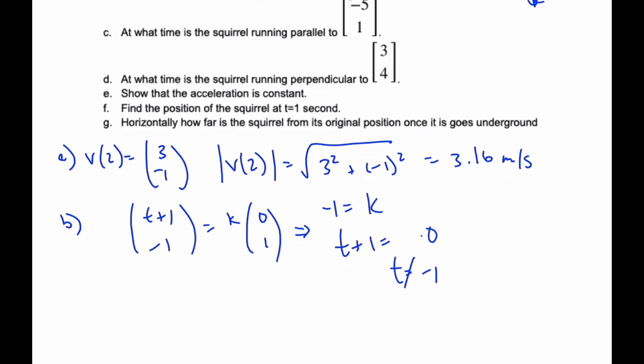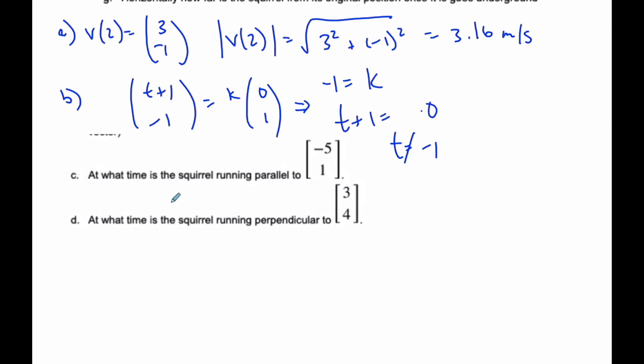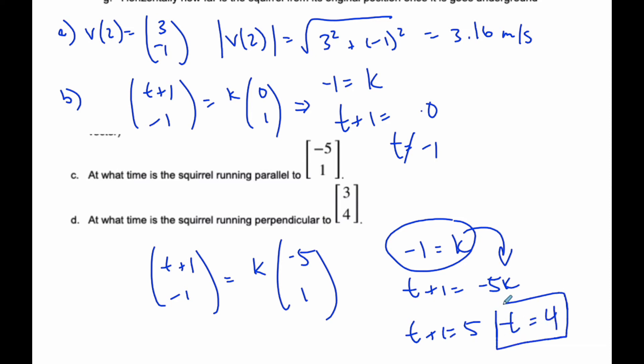What time is the squirrel running parallel to this particular vector? Well, I can say, t plus 1, negative 1, when is this velocity vector running parallel, so it's just got to be a scalar multiple of this vector. When I look at that, I know that negative 1 is equal to k from the y values, and I also know that t plus 1 is equal to negative 5k. Plugging this in, I have two equations, two unknowns, I know that t plus 1 is equal to 5, and so t is equal to 4. So at 4 seconds, the squirrel is running parallel to this particular vector.